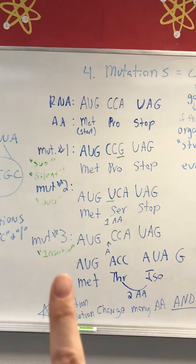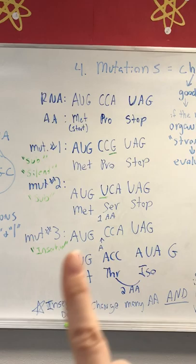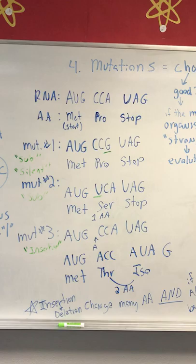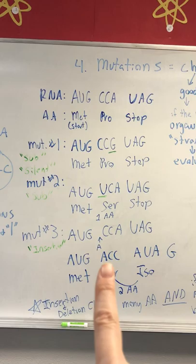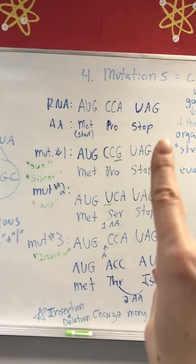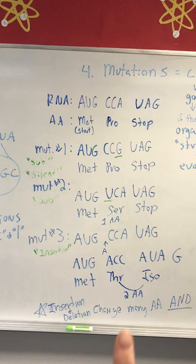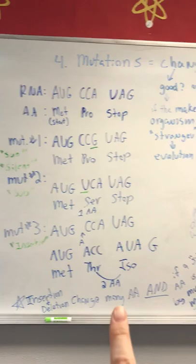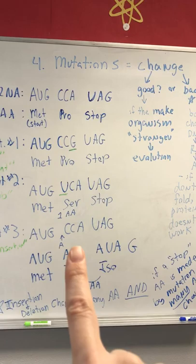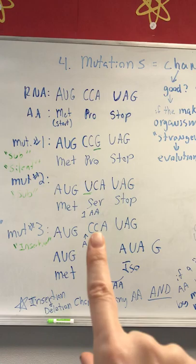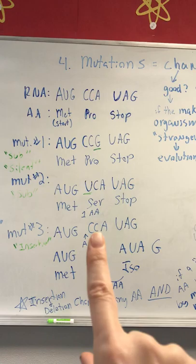Insertions and deletions are the worst mutations. Insertions add a base, pushing everything over; deletions remove a base, pulling everything over. This shifts the entire reading frame. For example, inserting an A changes the codons so instead of MET-pro-stop, you might get MET-3-iso and a leftover base, altering many amino acids. Inserting a premature stop codon also prevents everything after it from being translated. Silent mutations are best, substitutions less bad, but insertions and deletions are the worst.